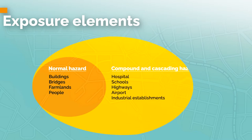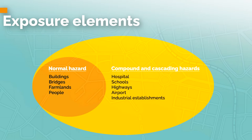However, under compound or cascading hazard conditions, elements that were considered safe — such as critical infrastructure like hospitals, schools, major highways, airports, or industrial establishments such as chemical factories — or even those located outside the main hazard zone, such as supply chains of food and export goods, could now fall under the scope of exposure assessment.